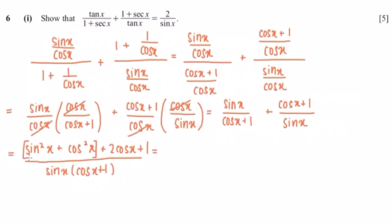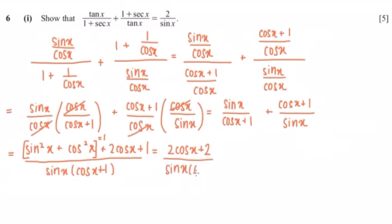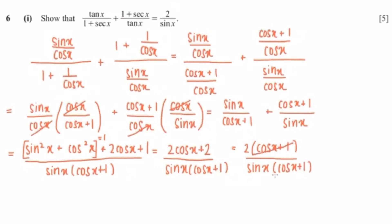Now you should know that sine squared x plus cosine squared x equals 1. So that gives us 2 cosine x plus 2, over sine x multiplied by cosine x plus 1. Now I'll factorize the 2 out — that's 2 times cosine x plus 1, over sine x times cosine x plus 1. You can then simplify, with the cosine x plus 1 cancelling, giving us the final answer: 2 over sine x.